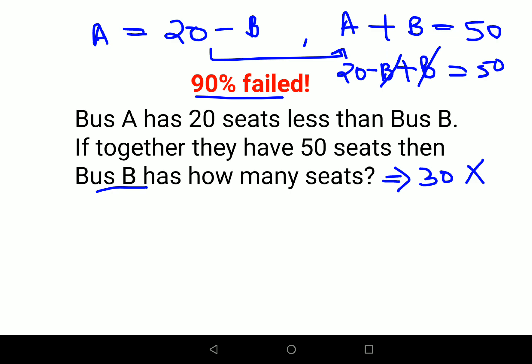So please understand, when you read the question, you have to pay clear attention to what they are saying. 20 seats less than Bus B—so A is actually B minus 20. And together they have 50, so we know that A plus B equals 50.